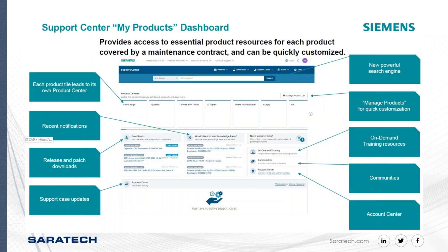Once you get into the dashboard, each product tile you currently have is shown. On the left-hand side, you can see the latest downloads and latest patches. If you're an NX user and you look at your dashboard, it will tell you if there are NX 2011 patches available. I'm currently at the 2007 series — that's the latest series right now — and the dashboard shows any current patches that are available.